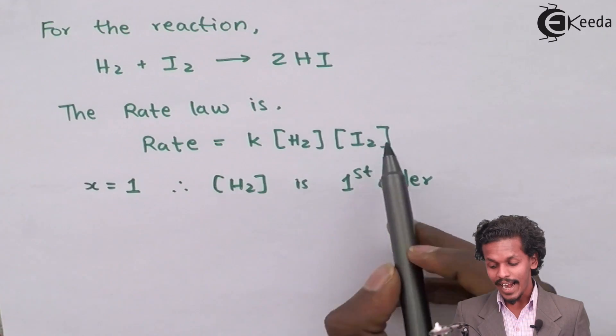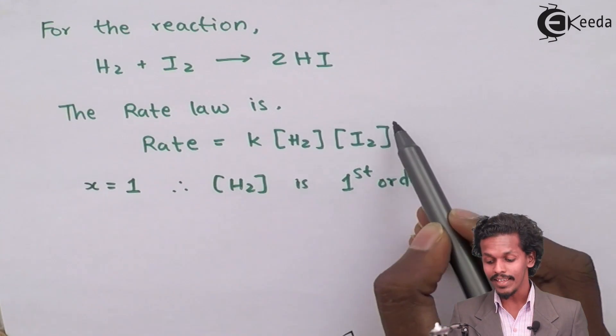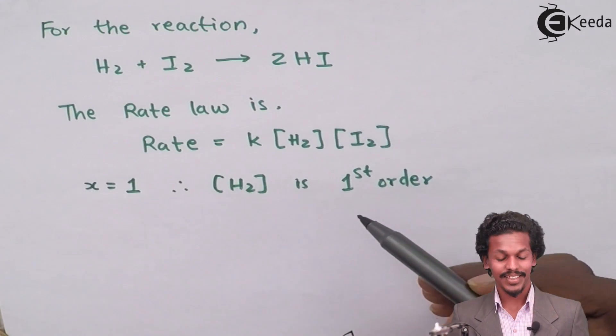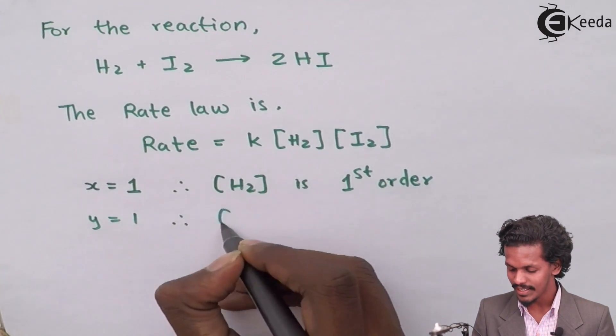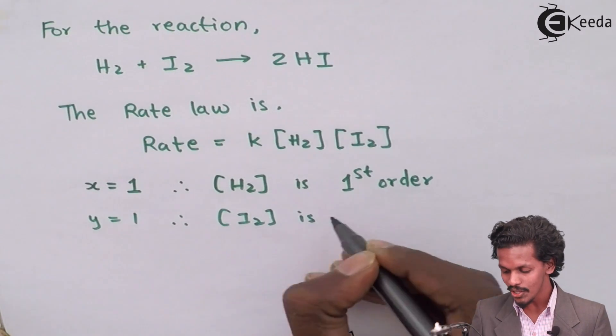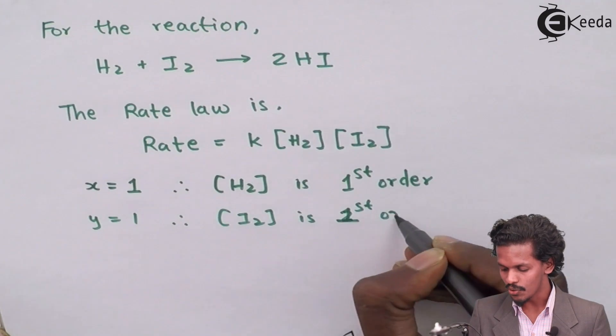Which means the concentration of H2 is first order. While that of the I2, there should have been a presence of Y. But in this case, the Y is equals to 1. So therefore, Y which is equals to 1, which means the concentration of I2 is also first order.